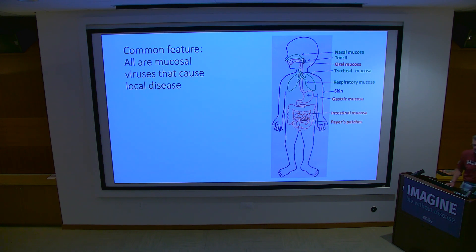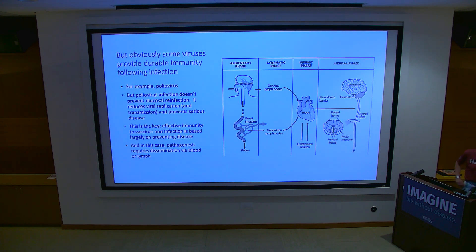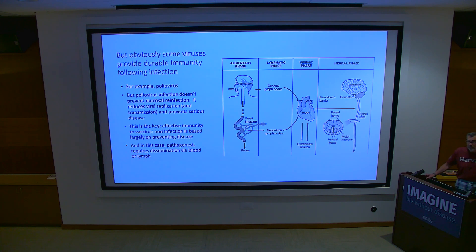The common feature is that these are all mucosal viruses that cause local disease. But polio vaccine provides lifelong immunity — we all know that. However, polio virus infection doesn't prevent mucosal reinfection. What it does is reduce viral replication and transmission, and it prevents serious disease — paralysis in the case of polio. Effective immunity to vaccines is largely based on preventing disease.